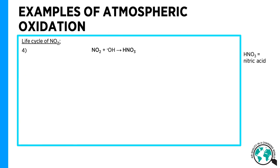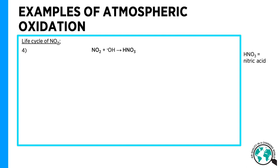In this reaction, nitrogen in nitrogen dioxide is oxidized by a hydroxyl radical, and nitrogen goes from oxidation state plus 4 to plus 5 in nitric acid. The oxygen in the hydroxyl radical has been reduced from oxidation state minus 1 to minus 2 in nitric acid.